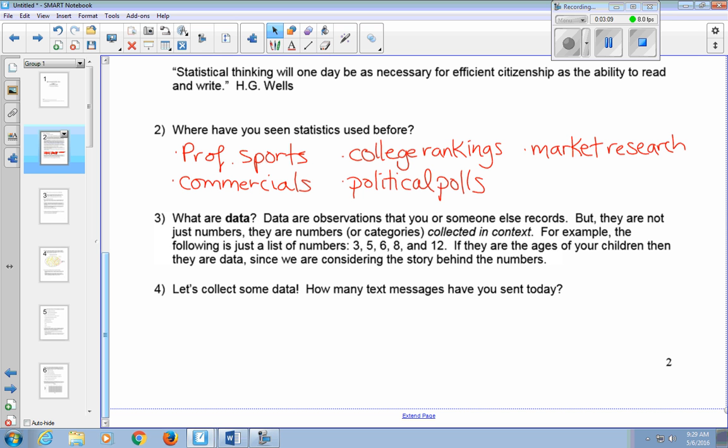So for example, the following is just a list of numbers. We've got 3, 5, 6, 8, and 12. But if I tell you they're the ages of your children, then they're data, since we're considering the story behind the numbers.